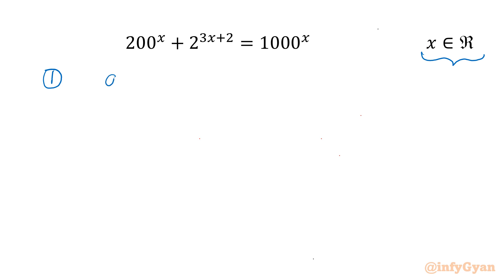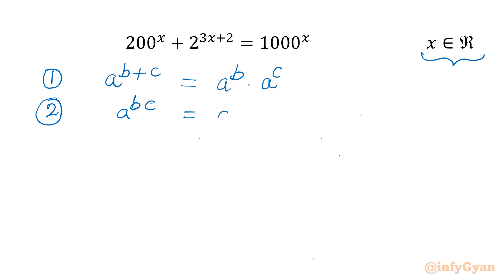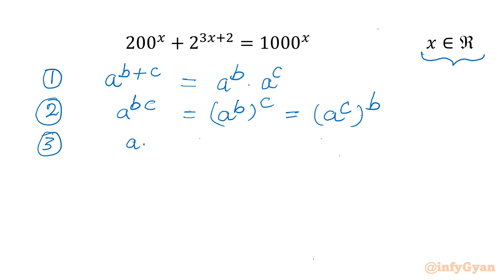First property: a power (b+c) equals a power b times a power c. Second property: a power (b times c) can be written as a power b, whole power c, or a power c, whole power b. Third property: (a times b) whole power n can be written as a power n times b power n.